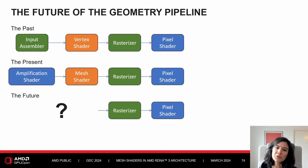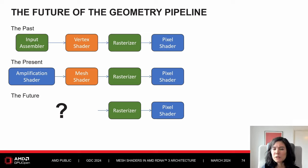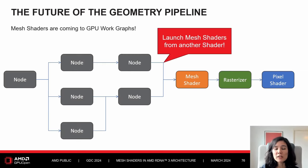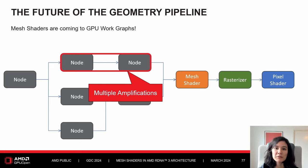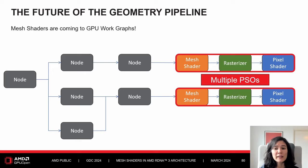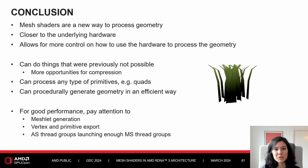Looking briefly into the future of the geometry pipeline: in the past we had the vertex shader pipeline, today we also have the mesh shader pipeline gaining a lot of traction. Mesh shaders are coming to GPU-driven work graphs, so it will be possible to launch mesh shaders from another shader. You can do multiple amplifications — not possible with amplification shaders which allow only a single level — enabling classification and coalescing with multiple PSOs. GPU-driven rendering is becoming much more flexible and now also supports draw calls with mesh shaders.